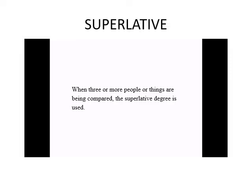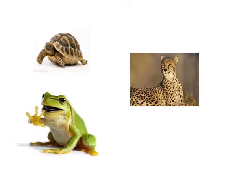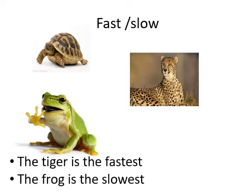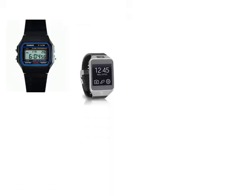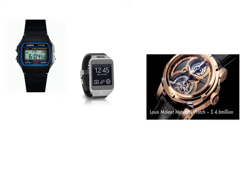What about superlative? The superlative is used when three or more people or things are being compared. Here we have a turtle, a frog, and a tiger. The tiger is the fastest, while the frog is the slowest.